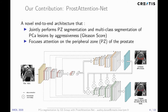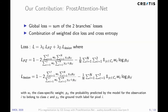The backbone architecture of our attention model is based on U-Net, which is used as a baseline. The global loss of the Prostate Attention Net is defined as the sum of each branch loss, namely L_PZ and L_lesion. Each branch loss is the sum of a weighted Dice loss and a weighted cross-entropy.